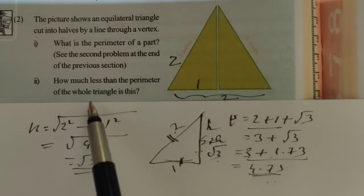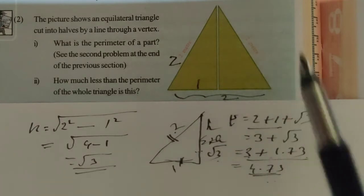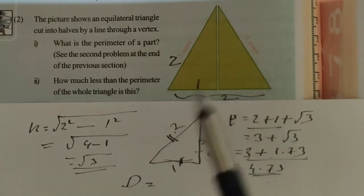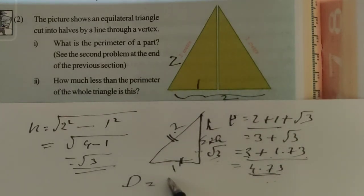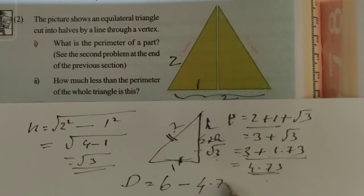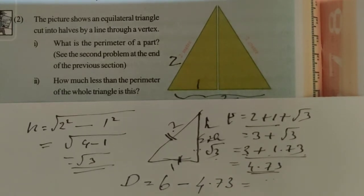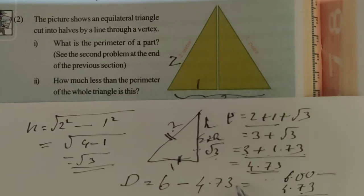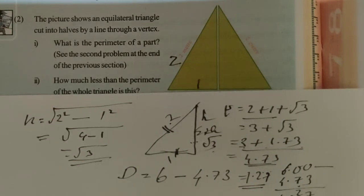Next question: how much less than the perimeter of the whole triangle is this? The whole triangle perimeter is 2 plus 2 plus 2, that is 6. So 6 minus 4.73. Subtracting: 6.00 minus 4.73 gives us 1.27. The difference is 1.27.